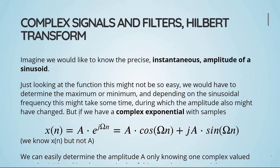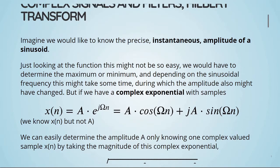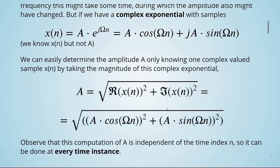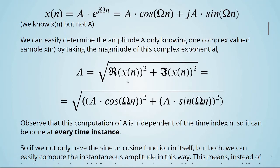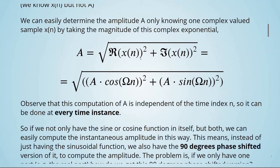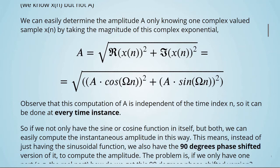We can determine A by only knowing one complex valued sample x(n), by taking the magnitude of this complex exponential. Here we take the magnitude with the real part squared plus the imaginary part squared and the square root. Observe that this computation of A is independent of the time index n, so it can be done at every time instance.